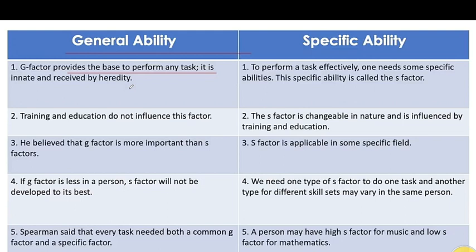Spearman says that every task requires both a common G-Factor and a specific S-Factor. To perform a task effectively, one needs some specific abilities. This specific ability is called the S-Factor. The G-Factor is a general ability used across tasks, while a particular skill set is required to perform specific ones.